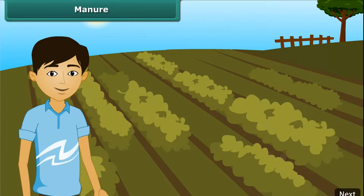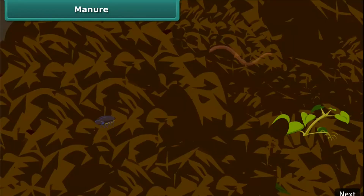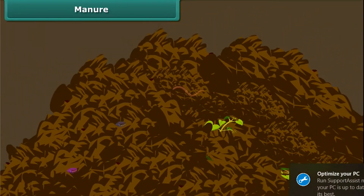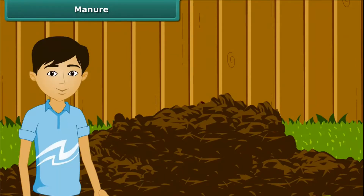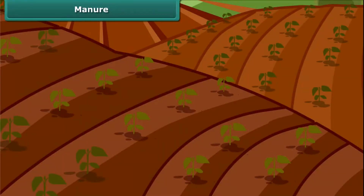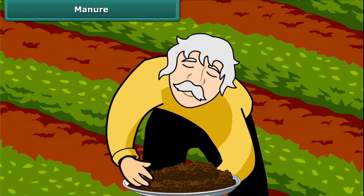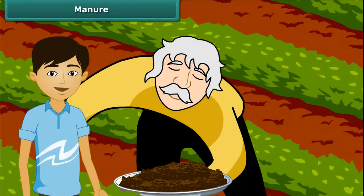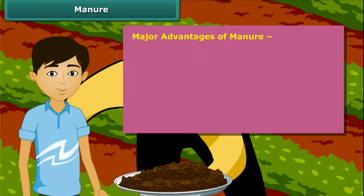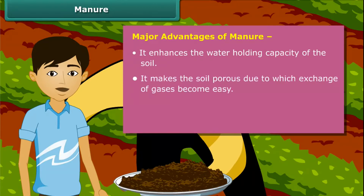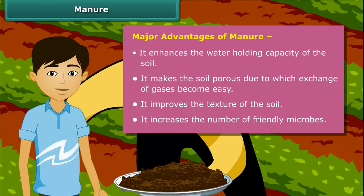Now let us move on to the next topic of this module. Manure is an organic substance obtained from the decomposition of plant and animal wastes. To make it, farmers dump plant and animal wastes in pits at open places where it is decomposed by microorganisms. Soil fertility and nutrients are reduced due to repeated cultivation of crops year after year. Farmers therefore add manure to the fields to replenish the soil with nutrients — this process is called manuring. Manure enhances the water holding capacity of the soil, makes the soil porous so exchange of gases becomes easy, improves the texture of the soil, and increases the number of friendly microbes necessary for a healthy crop.